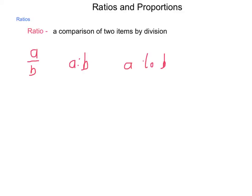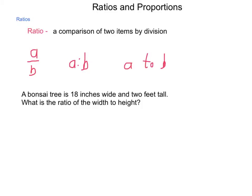And each of these means the same thing. For instance, let's take a look at this example. A bonsai tree is 18 inches wide and 2 feet tall. What is the ratio of width to height? Now, when we do this, the order that items are asked in, width to height, is very important because a comparison of A to B is not the same as saying B to A.